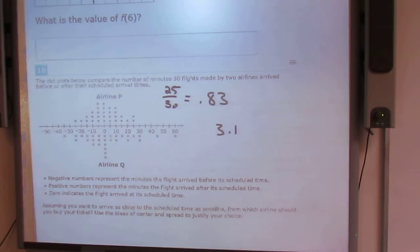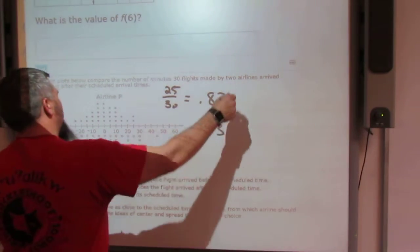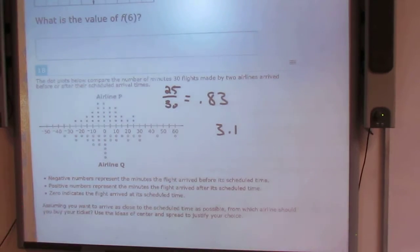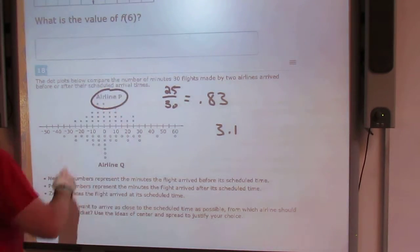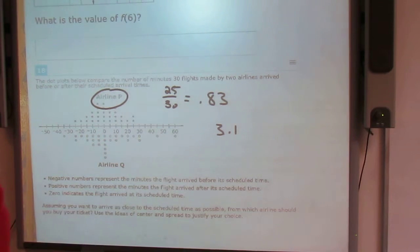So we are about 0.8 hours... we're about 0.8 minutes off on P. And we're about 3 off. And we are positive, so we're late, right? Positives reminds me of late after.